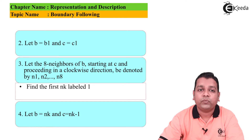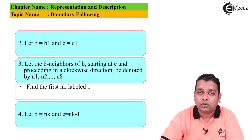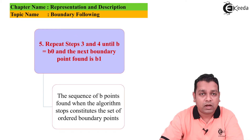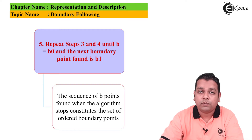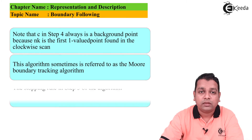Step 2: Let b = b₁ and c = c₁. Step 3: Let the eight neighbors of b starting at c and proceeding clockwise be denoted serially n₁, n₂, up to n₈. Find the first nₖ labeled 1. Step 4: Let b = nₖ and c = nₖ₋₁. Step 5: Repeat steps 3 and 4 until b = b₀ and the next boundary point found is b₁. The sequence of b points found when the algorithm stops constitutes the set of ordered boundary points.